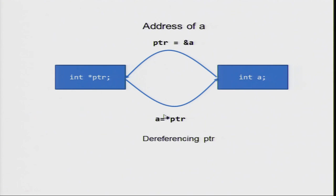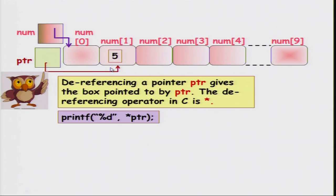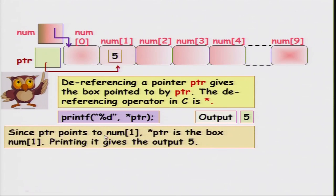So you can visualize & and * as reverse operations of each other: & takes an integer and gives its address; * takes a pointer and gives the value at the pointed-to address. Dereferencing a pointer gives you the value contained in the box pointed to by the pointer. So if I say printf("%d", *ptr), it will look up the location pointed to by ptr — in this case an integer box containing 5 — and print it. The output will be 5, not the content of ptr itself (which might be something like 1004). *ptr is that integer box and printing it gives the output 5.